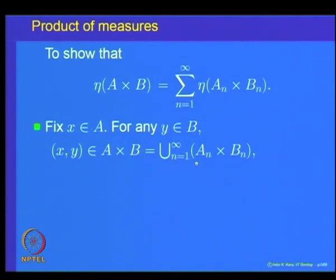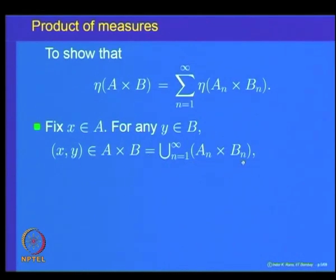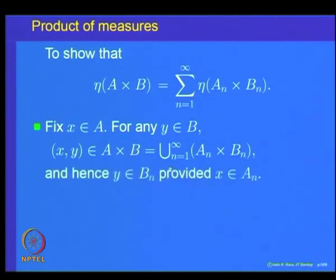That means (x,y) will belong to exactly one of them. Specifically, (x,y) will belong to Aₙ×Bₙ whenever x belongs to Aₙ, because (x,y) belonging to Aₙ×Bₙ implies x must belong to Aₙ and y must belong to Bₙ. So y belongs to Bₙ provided x belongs to Aₙ.